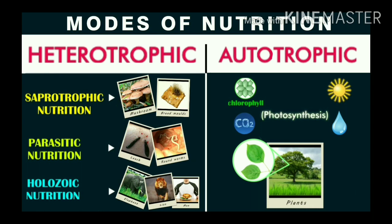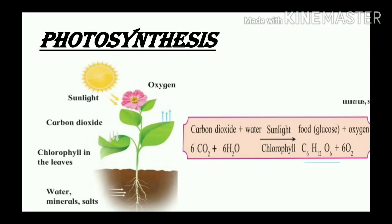Opposite to that is heterotrophic nutrition — some organisms depend on other organisms, plants or animals, for their food; this is called heterotrophic nutrition. Plants that prepare their own food are called autotrophic plants. Plants also need food for their growth, and they can produce their own food with the help of sunlight and chlorophyll.